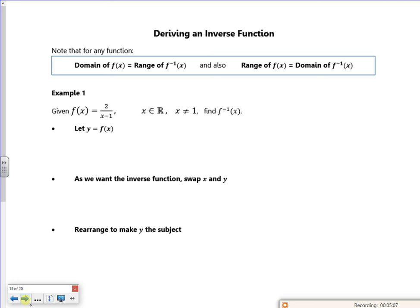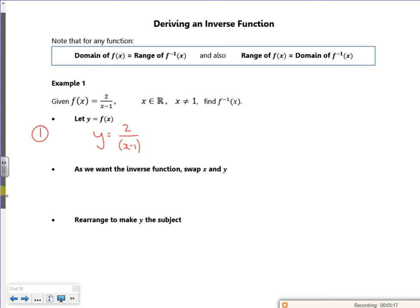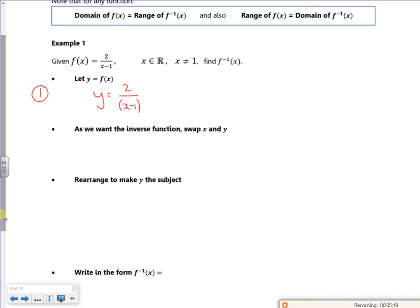So we've got a way of doing it. First thing is to change the f of x into y equals. So I've got y equals 2 over x minus 1. Now there's a reason we swap the x and y over. So I just swap the x and y over.